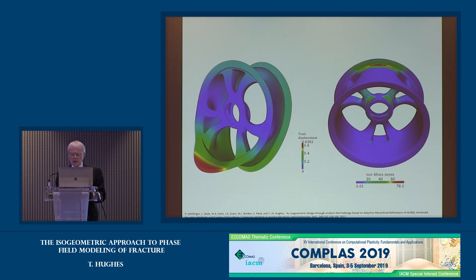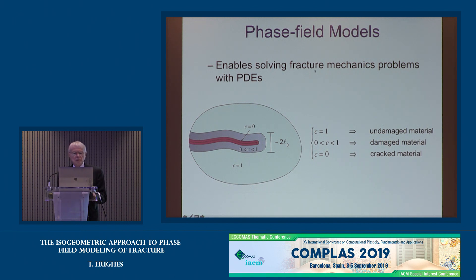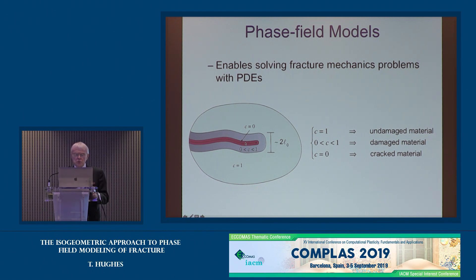One could say the trimmed CAD file is itself a phase field, where what's been trimmed away is the zero phase and the actual material is the one phase. Phase field models have caused a big stir in fracture mechanics because they make fracture mechanics problem-solving simply a matter of solving partial differential equations. In this context, the phase field parameter C is like one minus a damage parameter: C equals zero along a crack, C equals one at intact material, and the field C is continuous, smooth, and diffuses the crack to a certain extent.